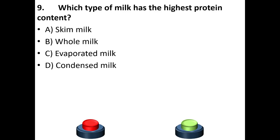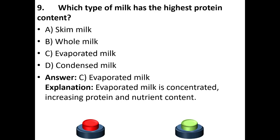Ninth question: Which type of milk has the highest protein content? A. Skim milk, B. Whole milk, C. Evaporated milk, D. Condensed milk. The answer is C — Evaporated milk. Evaporated milk is concentrated, increasing its protein and nutrient content.